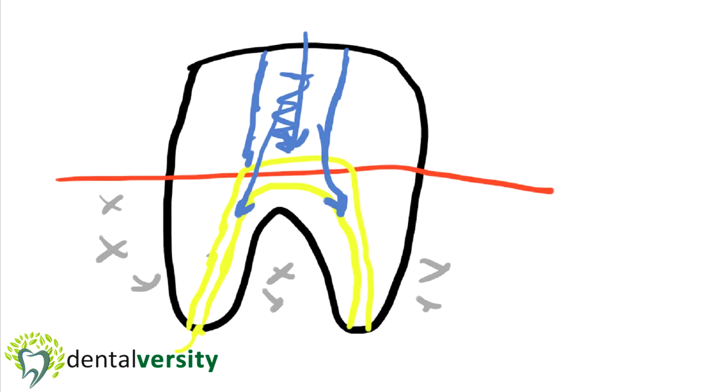Once everything has been cleaned up, then the canals can be sealed up. Let's do an orange color here because orange is the color of the sealer material that we use. Now, once it's all cleaned up, we're going to fill these canals with a special sealer material.